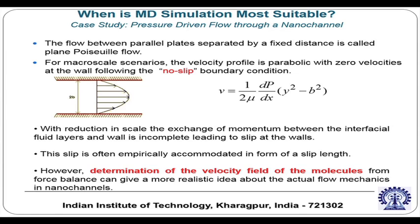Consider a pressure-driven flow in a nano channel. Continuum predictions give the standard fully developed velocity profile. However, with reduction in scale, the exchange of momentum between interfacial fluid layers and the wall is incomplete, leading to slip at the walls. This slip is empirically accommodated as a slip length. However, from molecular-scale force balance information, one can directly obtain the velocity profile and hence the slip length, providing a more realistic idea of the actual flow mechanics in nano channels.